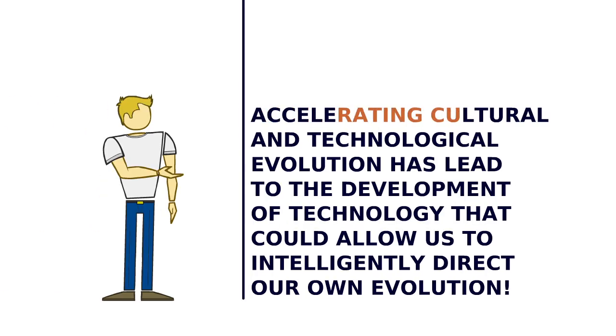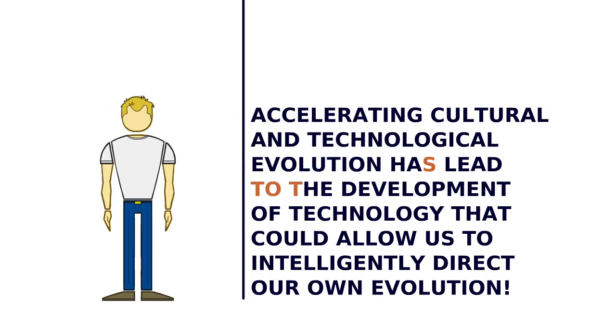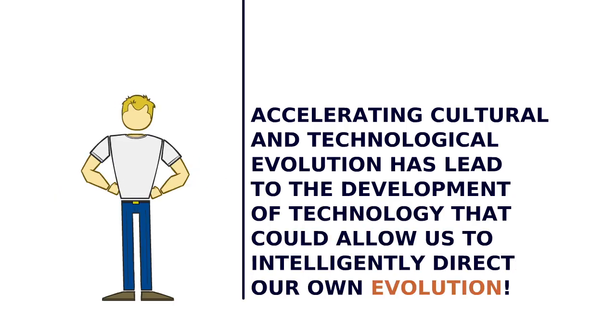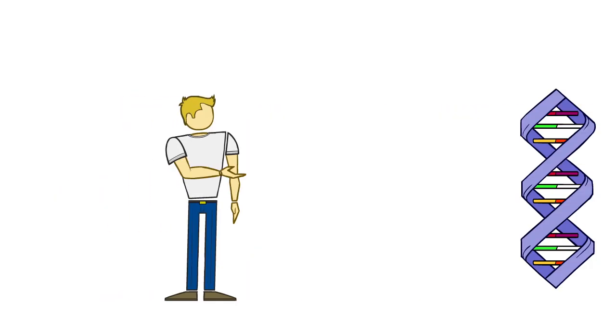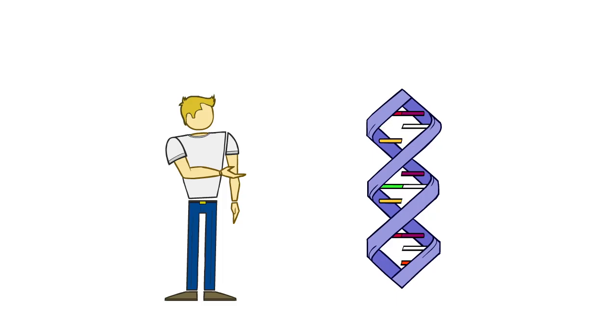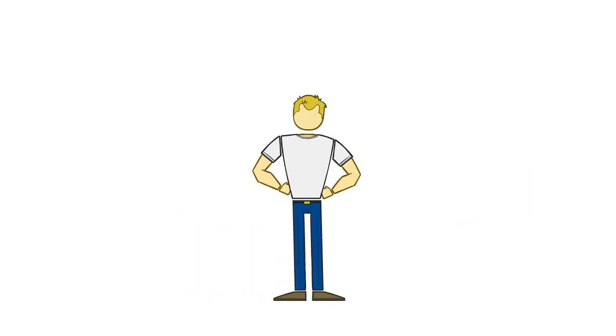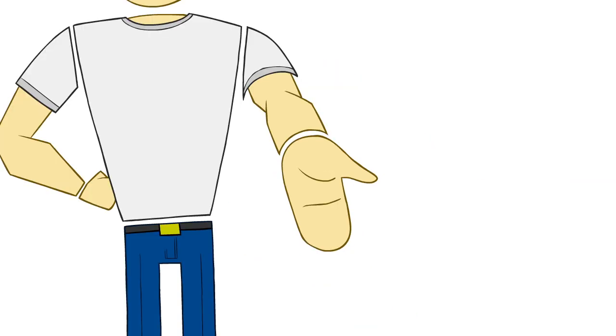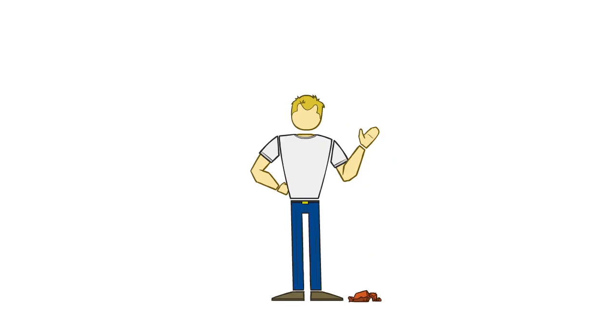In the modern world, accelerating cultural and technological evolution has led to the development of technology that could allow us to intelligently direct our own evolution. This could be done by directly engineering our own genomes, turning on and off different sections within it. We could also do this by gradually replacing our cellular structures with nano-engineered computers designed to perform the same tasks our cells perform, only better.